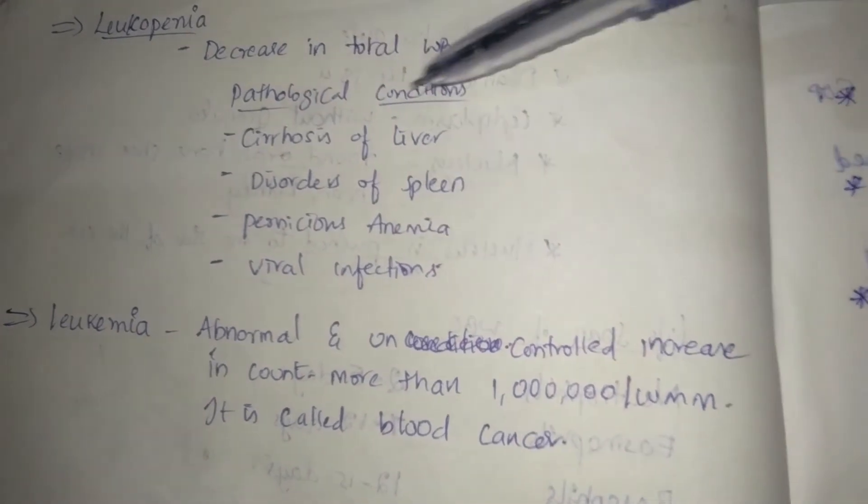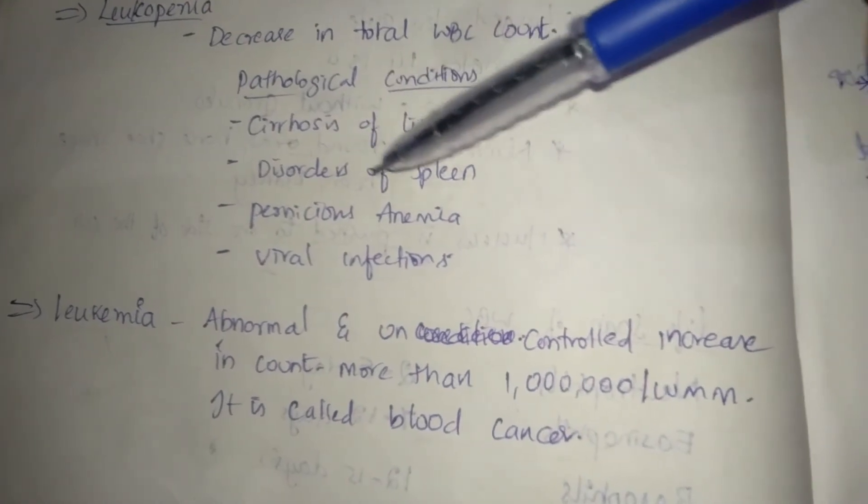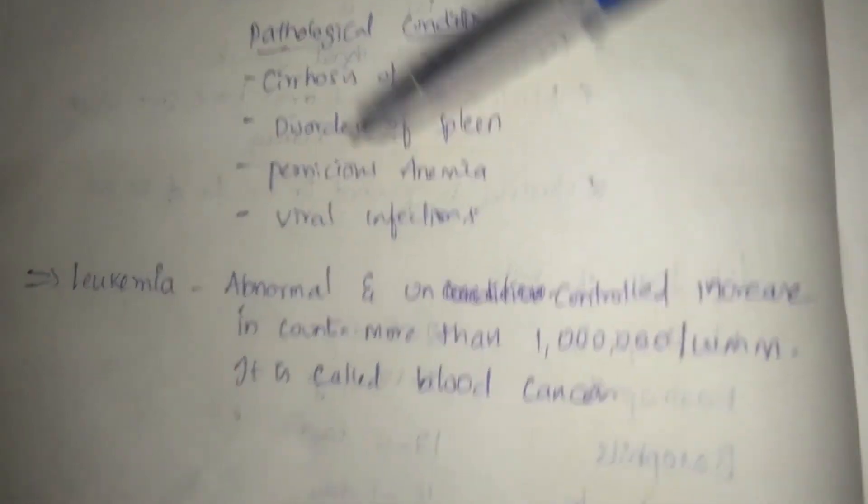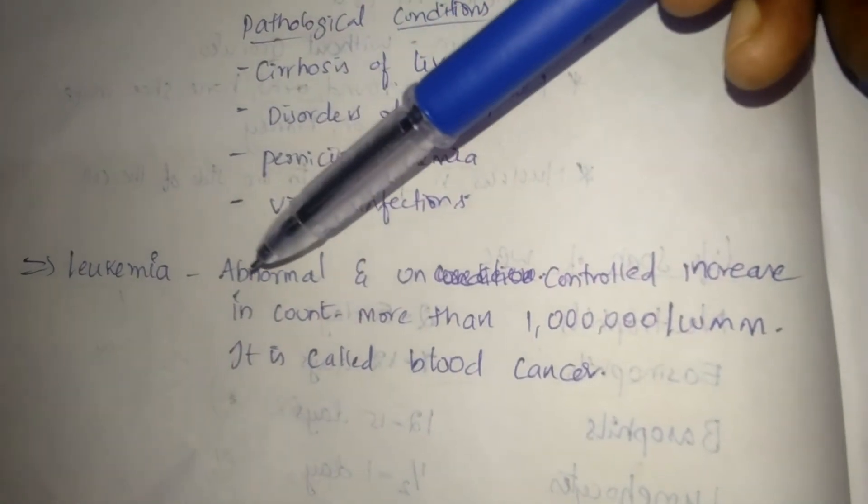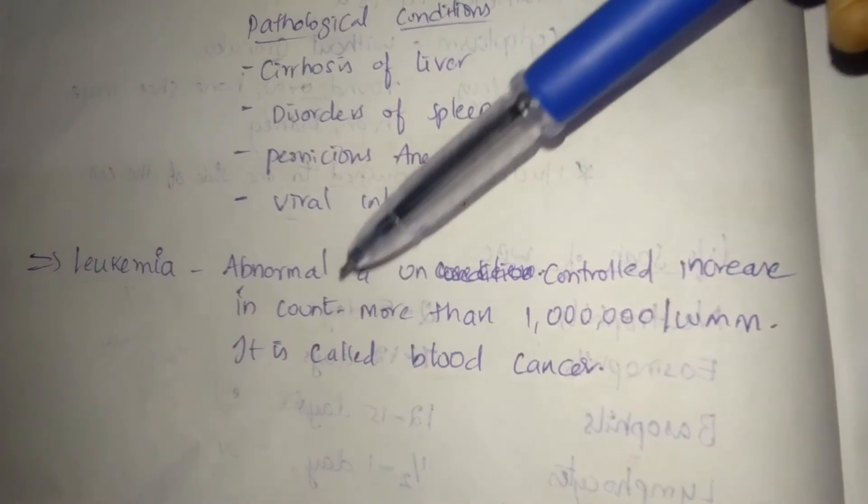Next, leukopenia: decrease in total WBC count. Pathological conditions include infections of liver, disorders of spleen, pernicious anemia, and viral infections. Leukemia: abnormal and uncontrolled increase in cancerous WBC count. It's called blood cancer.